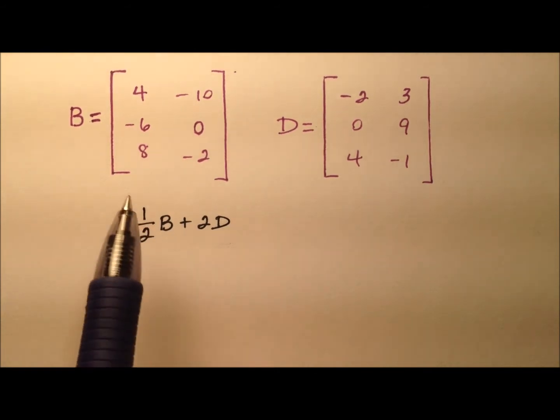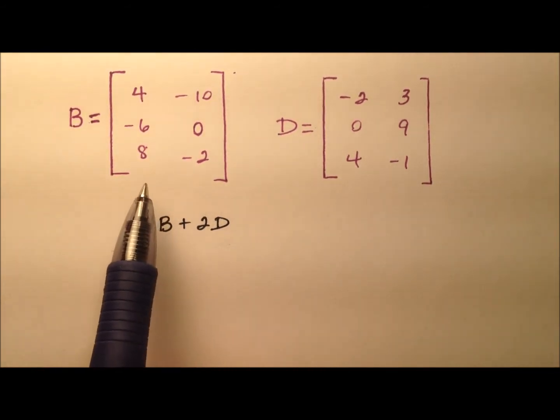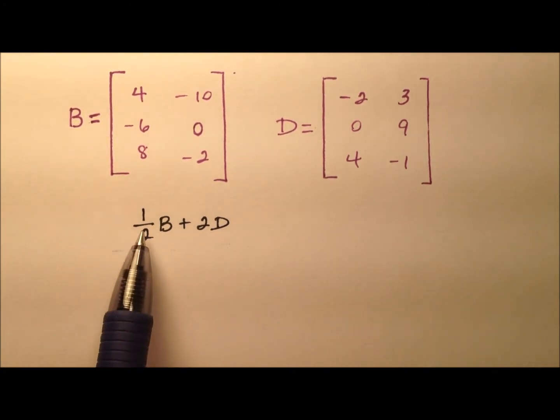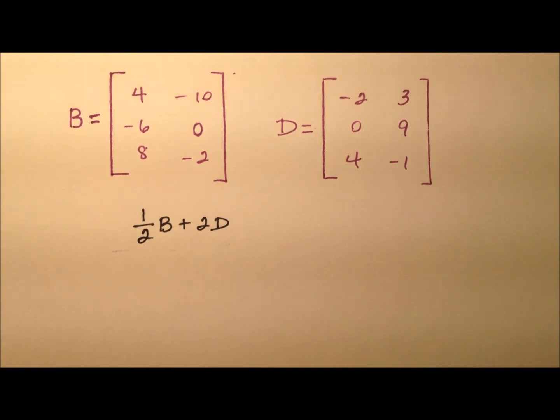In this example, we have ourselves a couple of matrix definitions. We have matrix B and matrix D, and we would like to evaluate this expression 1 half B plus 2D.